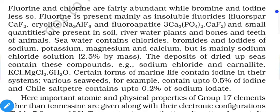Fluorine is present mainly as insoluble fluorides; small quantities are present in soil, river water, plants, and bones and teeth of animals. Sea water contains chlorides, bromides, and iodides of sodium, potassium, magnesium, and calcium, but it is mainly sodium chloride solution at 2.5% by mass, which is the main source of NaCl obtained from sea water.